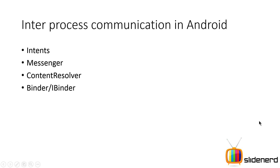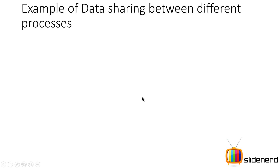Now let's talk about inter-process communication in Android, which will be covered in upcoming videos. There are four means of IPC: intents, which we've touched on in our Android Tutorial for Beginners playlist; messenger and IBinder, which I'll cover in upcoming videos in the same playlist; and the content resolver, which I'll cover in our database tutorials playlist when we talk about content providers.